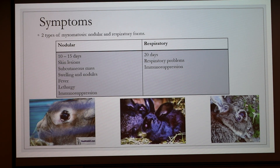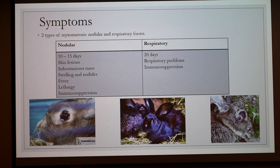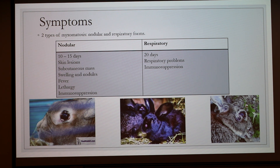There are two types of myxomatosis: the nodular and the respiratory forms. First, the acute nodular form. There are 10 to 15 days between the infection and the death. The rabbit has skin lesions, subcutaneous mass at the site of inoculation, swelling and nodules around the eyes and genitals, fever, lethargy, and immunosuppression — meaning there is a predisposition to bacterial superinfections. Then respiratory problems come and the death is often due to pneumonia.